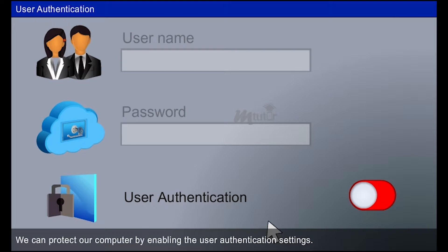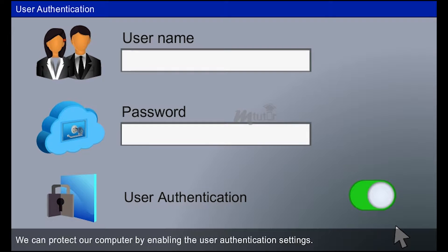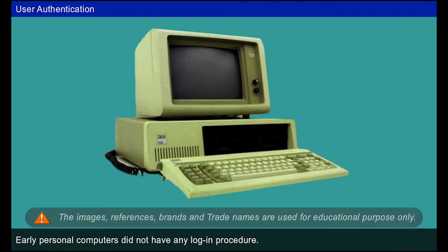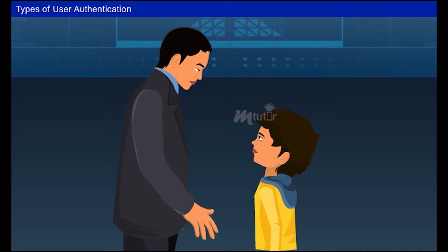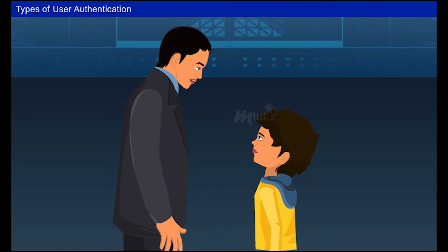Similarly, we are able to see only stars or dots while typing passwords in most accessing options. Nowadays we can protect our computer by enabling user authentication settings. However, early personal computers did not have any login procedure. Monty was curious and eager to know more about the user authentication process, so Sendal started explaining about the types of user authentication.